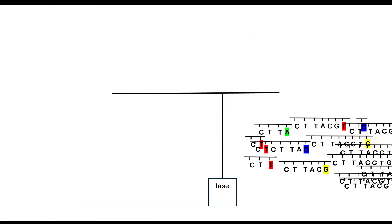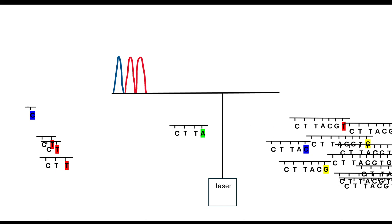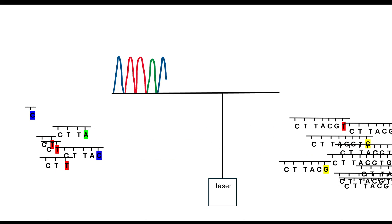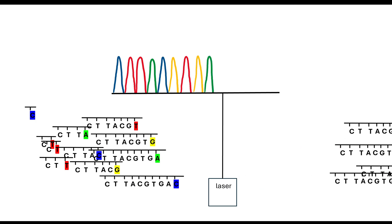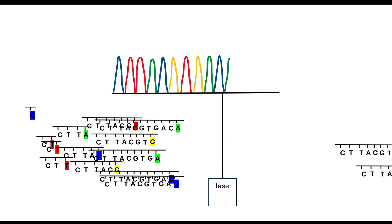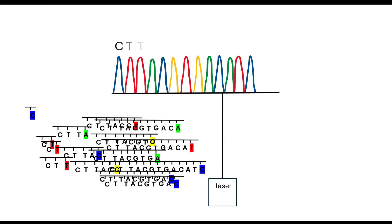There is a laser that will detect and signal when a base goes past it, because of the fluorescent dye. The moment a base goes past the laser, it is detected by the presence of that fluorescent dye. That data is then analysed by a computer to determine which bases are passing through, and we end up with our sequence.